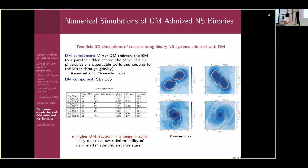For dark matter in the core, we use mirror dark matter — essentially the same baryonic matter but in a hidden sector, coupled almost exclusively through gravity to the baryonic component. We performed nine different simulations for 1.4, 1.3, and 1.2 solar mass stars, considering 0%, 5%, and 10% dark matter fractions. The table shows the baryonic and dark matter central densities and the radii of the stars.